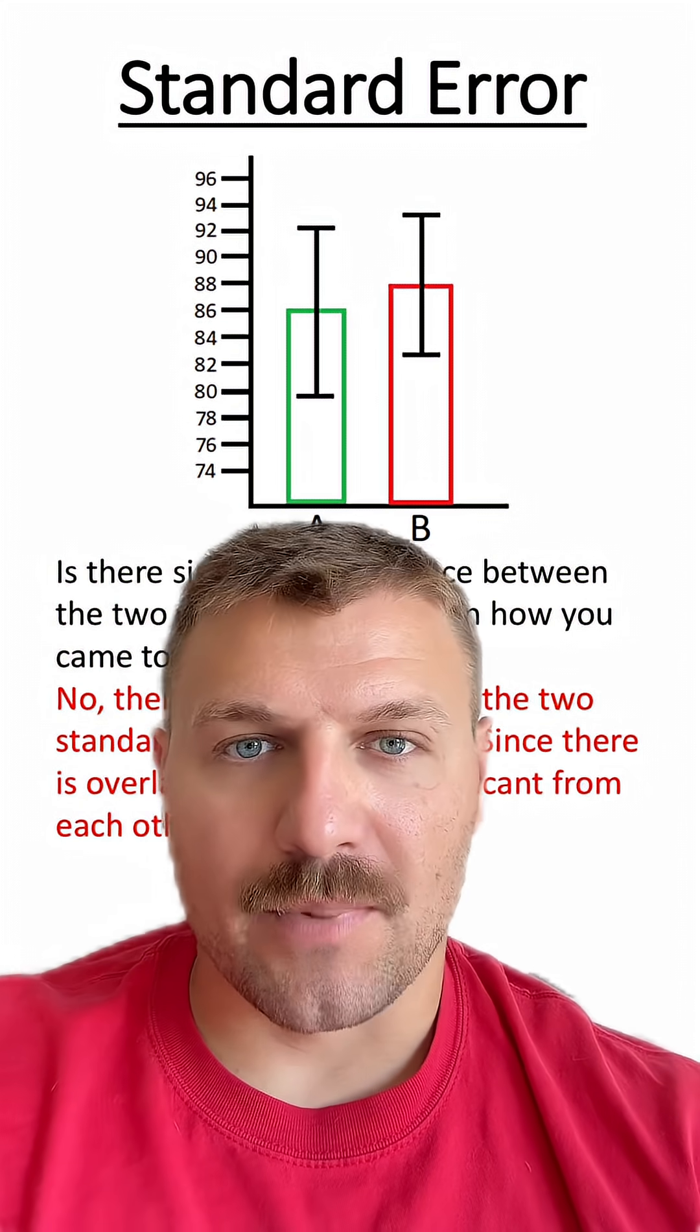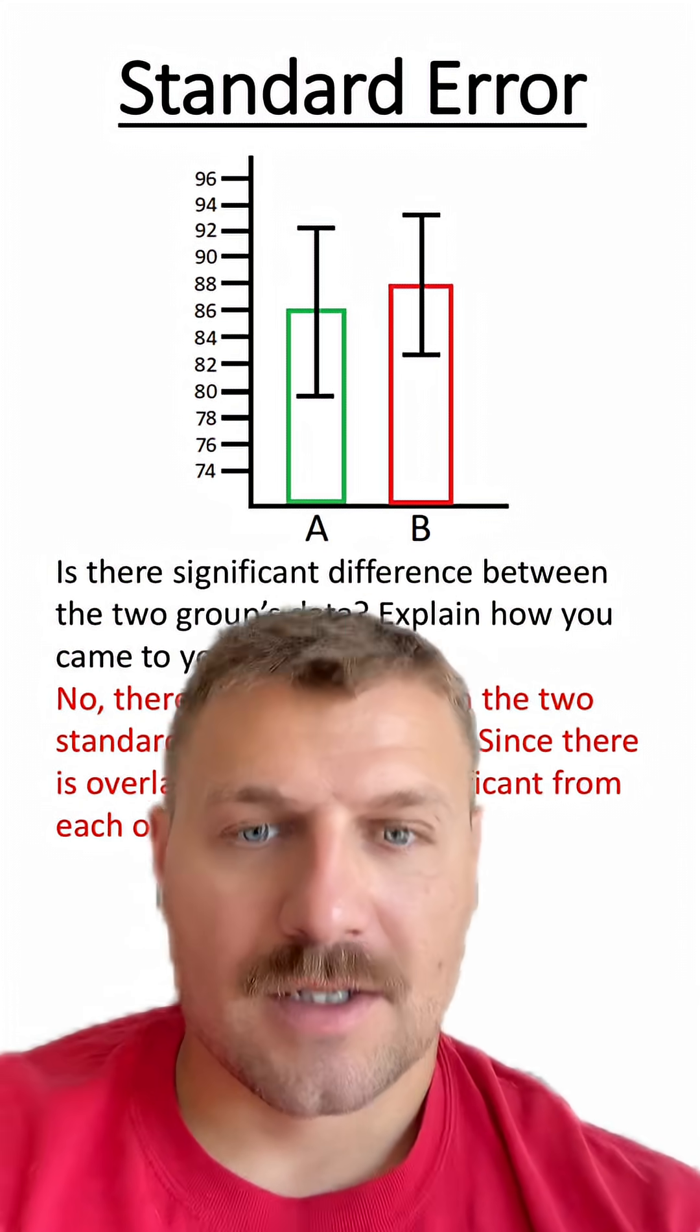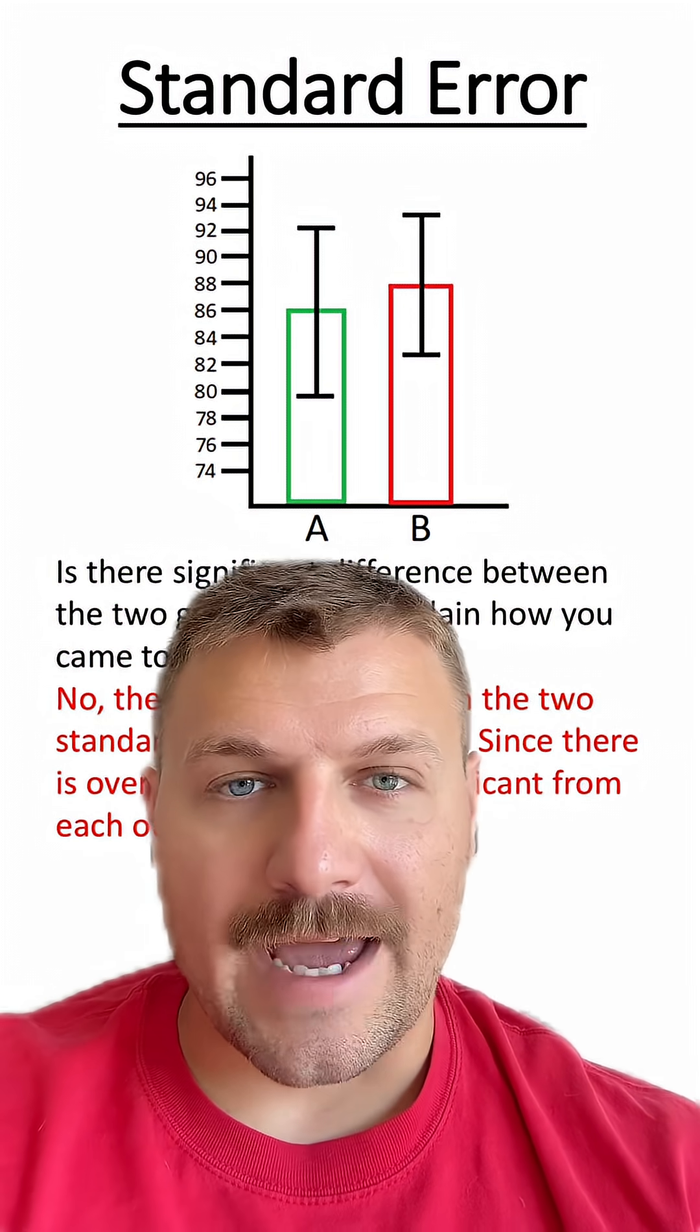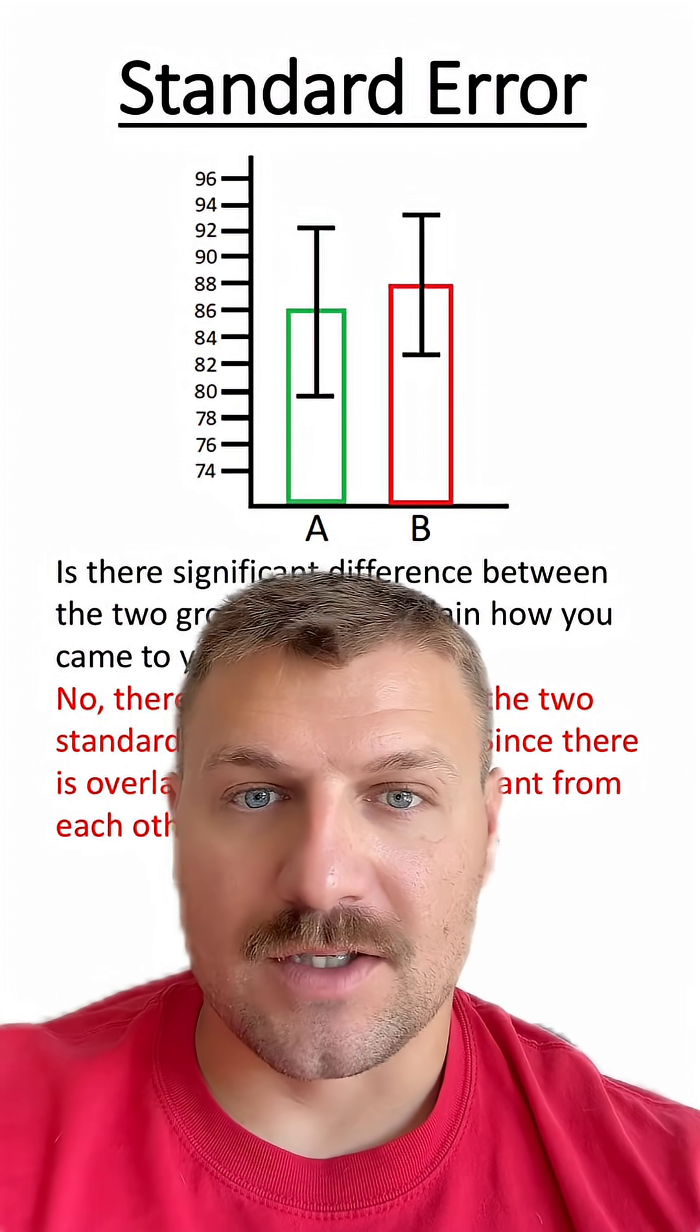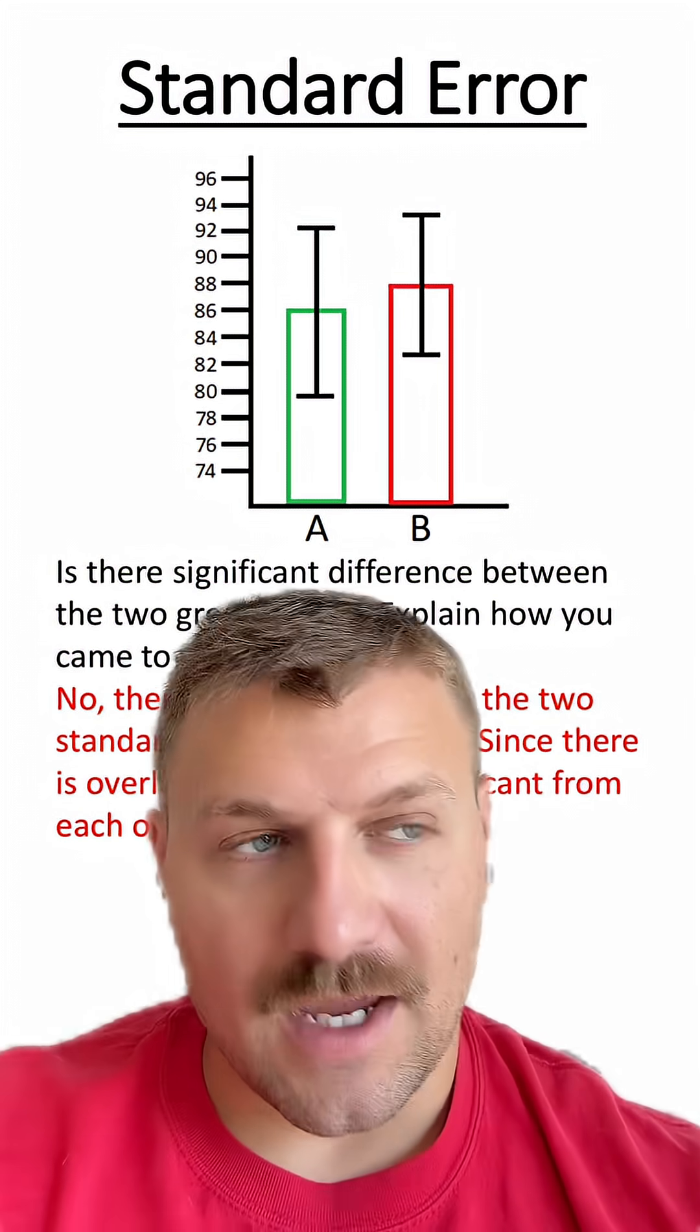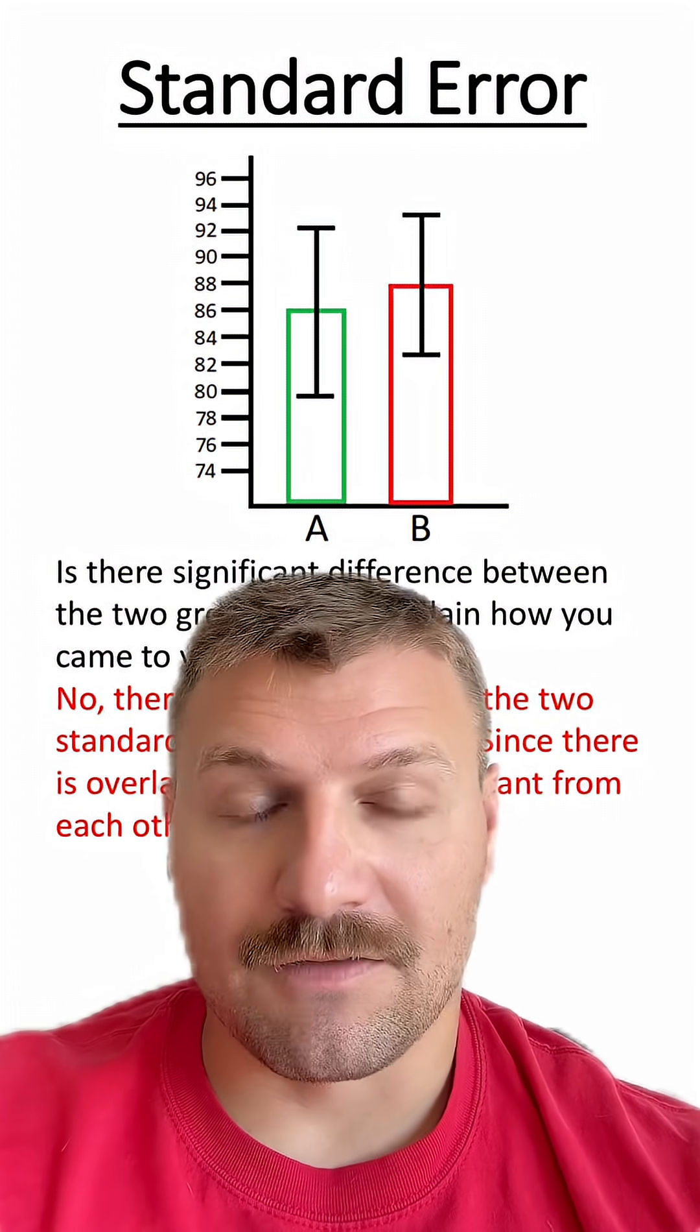Basically, what these error bars show us is, on any given day, where could this average really be? Since the error bars overlap, it doesn't show a significant difference between these two groups of data. If the error bars didn't overlap, then you could say the data is significantly different from each other.